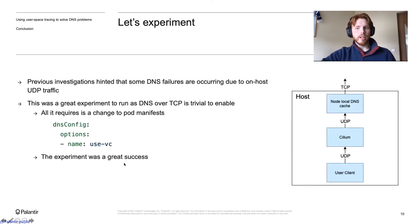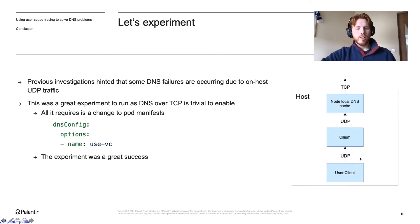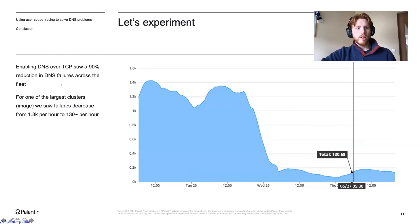Now that we have a signal on the original DNS failures, we can run some experiments. On the right, you can see how our DNS queries travel through the stack. As soon as they leave the host, we bump them to TCP. However, while on the host, they're free to use UDP. We theorized that UDP is causing a lot of DNS failures. We can easily test this by switching to DNS over TCP with some pod-level manifest changes. The experiment was a great success. Enabling DNS over TCP, we saw a 90% reduction in DNS failures across the fleet. DNS failures before the experiment were hovering around 1.3k per hour. After the experiment, they fell to 130 failures per hour. The new metrics gave us confidence our changes are beneficial. Without it, we would have never known that enabling DNS over TCP has such a significant impact on our DNS subsystem.